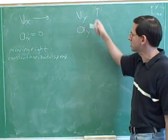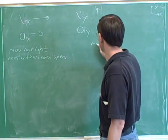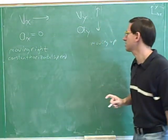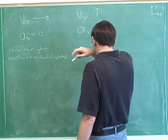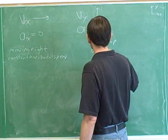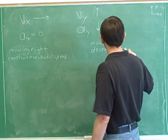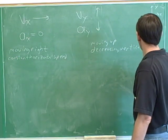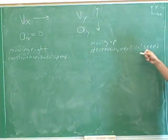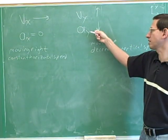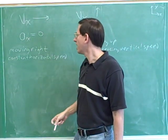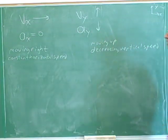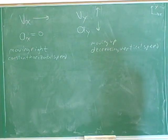Vertically, the velocity is pointing up, so we're moving up. In this case, the acceleration is anti-parallel to the velocity, so we're slowing down — decreasing vertical speed. Our vertical speed is decreasing because the vertical acceleration is anti-parallel to the velocity, but our horizontal speed is constant because our horizontal acceleration is zero. So here's all the information we can obtain about the movement of this object.